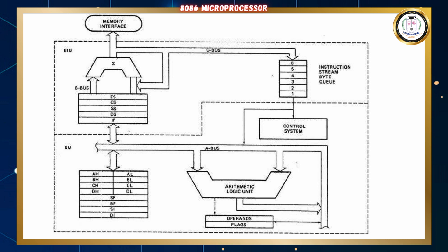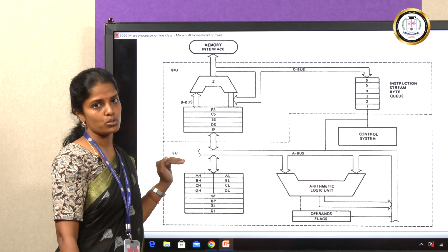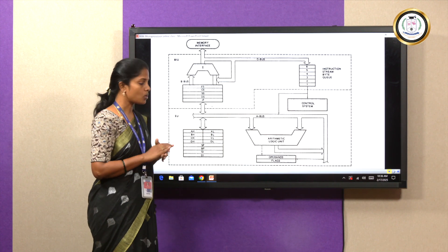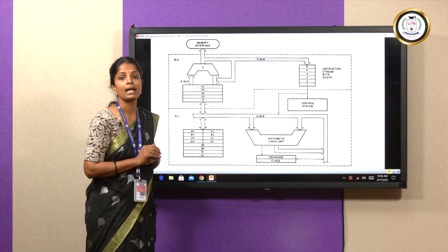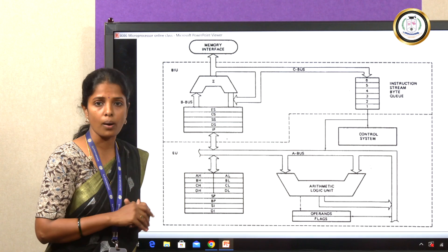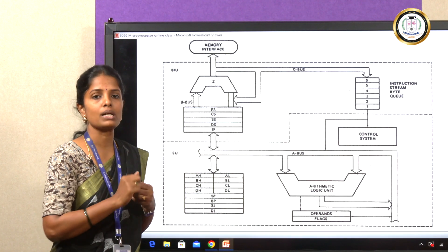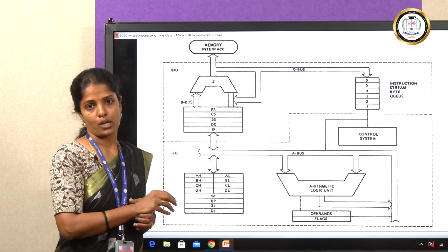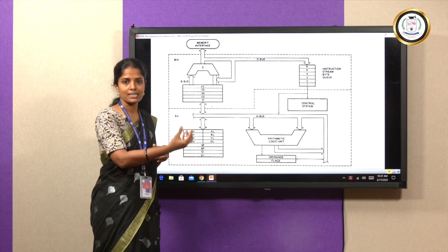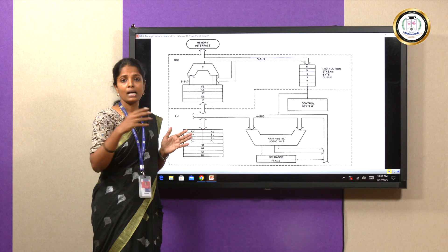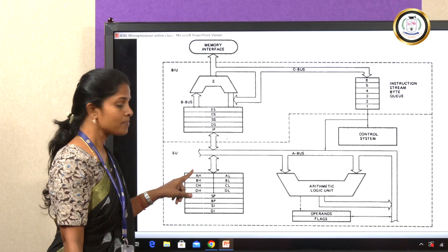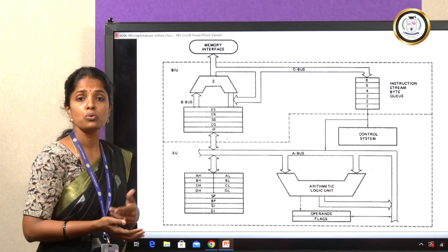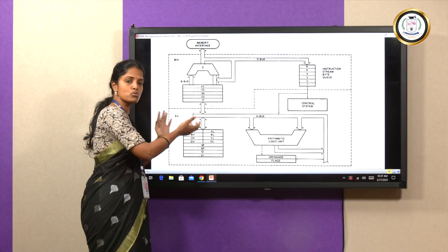The bus interface unit connects directly to the control system of the execution unit, which performs the execution operation. The execution unit comprises A, B, C, and D registers, which are 16-bit general purpose registers. In the 8086, as in the 8085, the A register is the accumulator — the place where all operations such as addition, subtraction, multiplication, division, shifting, and rotating are performed, and where one operand is always present. The result is first generated in the accumulator. These four general purpose registers can be used either as 16-bit registers or as two 8-bit registers.